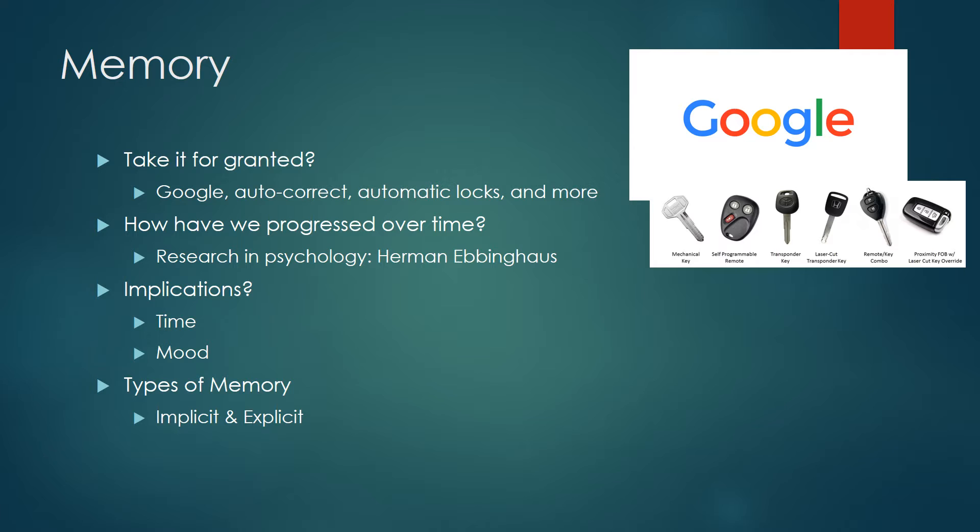But with research, we have progressed to understand memory. Hermann Ebbinghaus is well known for his initial work on memory and acted upon studying it. Ebbinghaus has shown us that there can be implications on memory — for example, time, different aspects of memorizing, or being exposed to material, and also mood, or sensations and feelings.